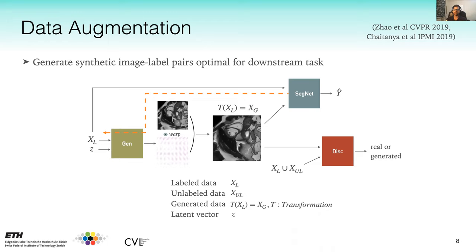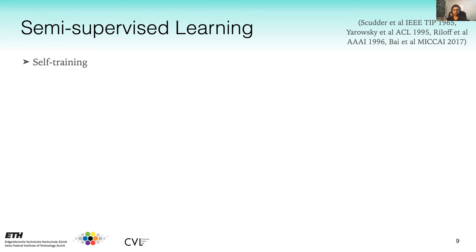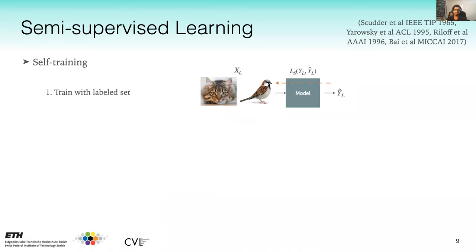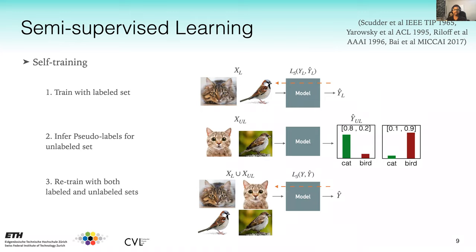The second category is semi-supervised learning. One relevant approach is self-training: first, train a model on the labeled set; second, infer pseudo-labels for unlabeled examples; third, retrain the network with both labeled and pseudo-labeled images. Steps two and three are repeated iteratively until the network converges.